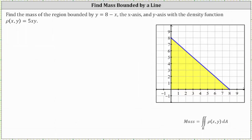We're asked to find the mass of the region bounded by the line y equals 8 minus x, the x-axis and the y-axis, with the density function ρ(x,y) equals 5xy. I've already graphed the bounded region on the right. We will call this region R.